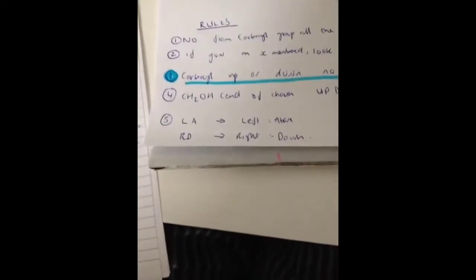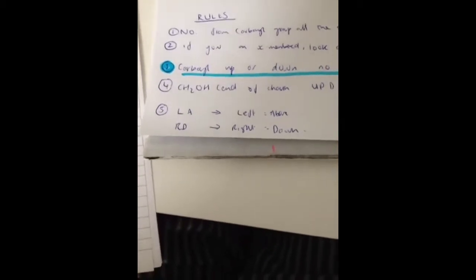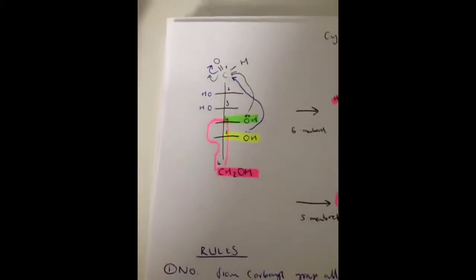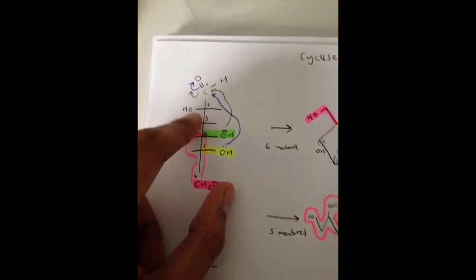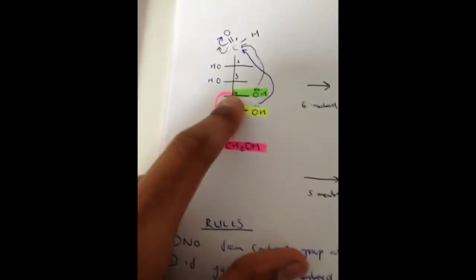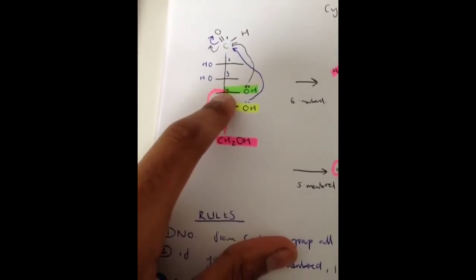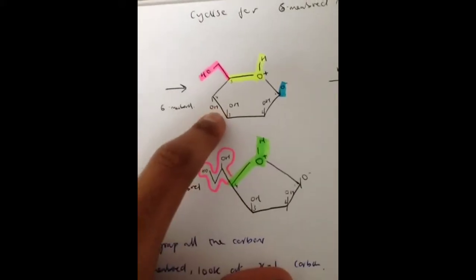And the 5th and final rule, this is the most important one, just remember LA road. Obviously you know LA from America, just remember road, everyone lives on a road. Basically what it means is in Fischer's projection from here, if it's on the left hand side it will be above the ring. So as you can see, above the ring, look at number 2, left is above the ring. And number 4, it's right so it must be down as you can see there.